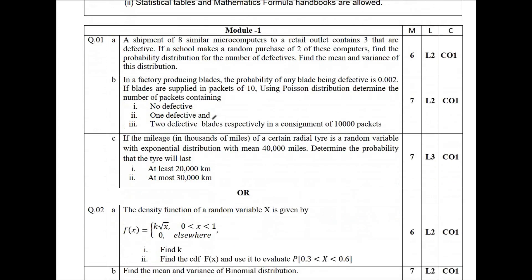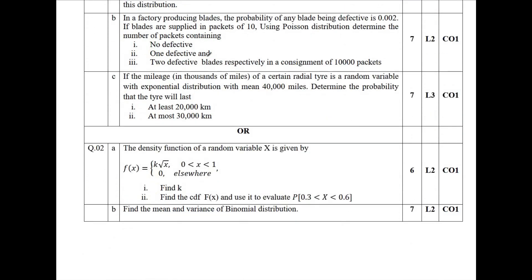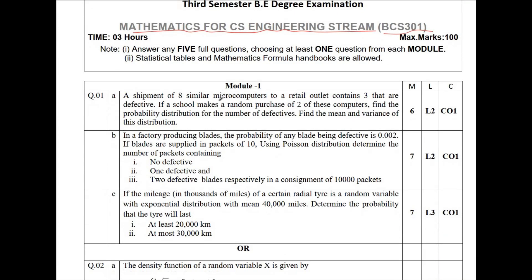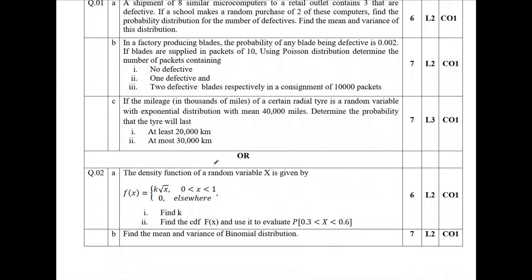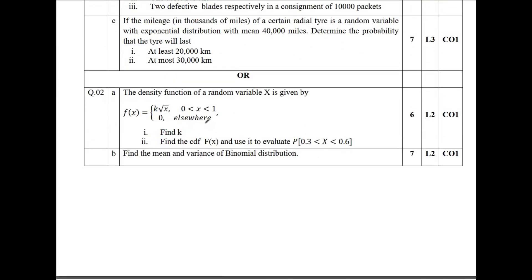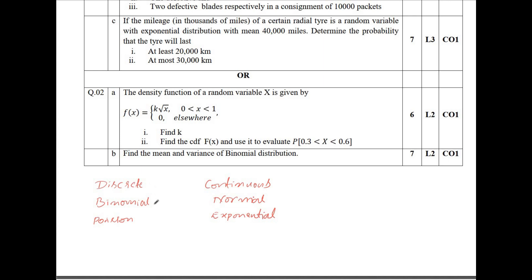Moving on to module 1. Here are the model question papers I am discussing. In module 1, we are going to have topics on discrete random variable. Under discrete random variable, we are going to study binomial and Poisson. Under continuous random variable, we are going to study normal distribution and exponential distribution.